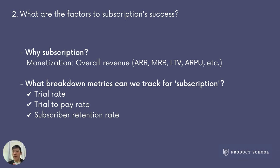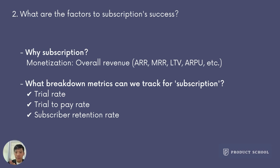To help us understand better, we can form a paid user funnel with three major conversions: free users converting into trialing users, trialing users converting into paying users, and paying users converting into retaining paying users. Trial rate refers to the probability of free users converting to trialing users upon seeing the sub dialogue — this helps track whether users are willing to give it a try. Trial-to-pay rate refers to the probability of trialing users converting to paying users by the end of the trial. Subscriber retention rate refers to the probability of paying users continuously subscribing to a plan.